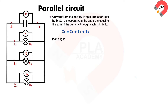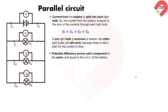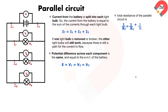If one light bulb is removed or broken, the other light bulbs will still work because there is still a path for the current to flow. The potential difference across each component is the same and equal to the EMF of the battery, so EMF E equals V_1 equals V_2 equals V_3. The total resistance of the parallel circuit is given by: 1 over R_T equals 1 over R_1 plus 1 over R_2 plus 1 over R_3.